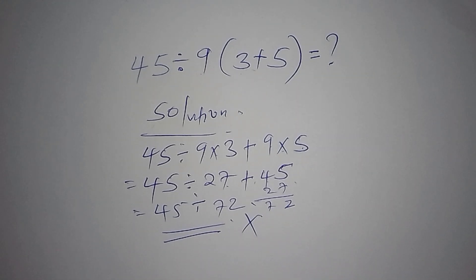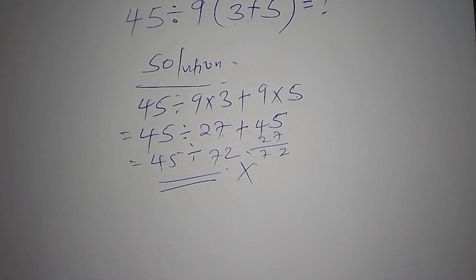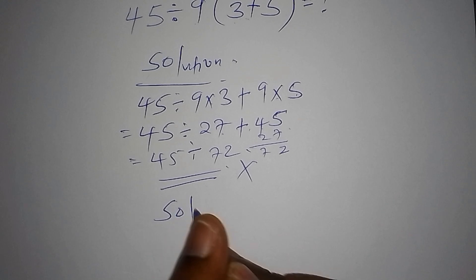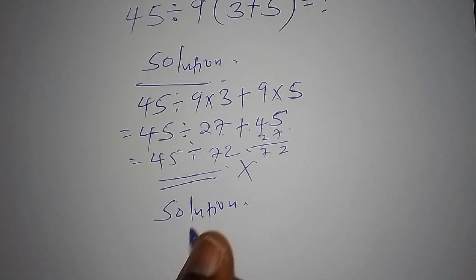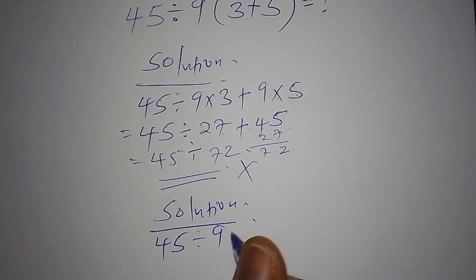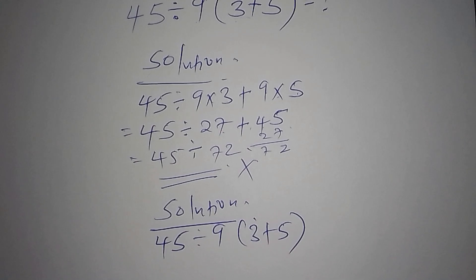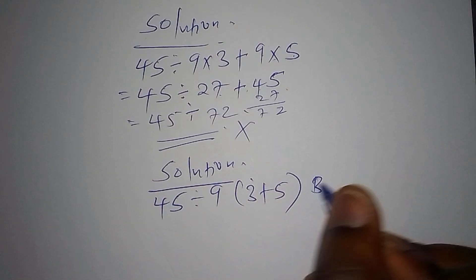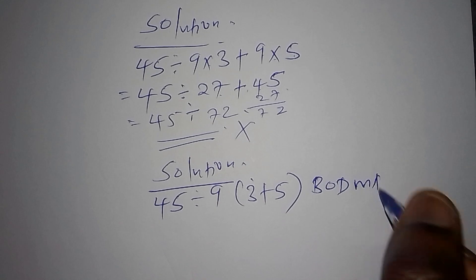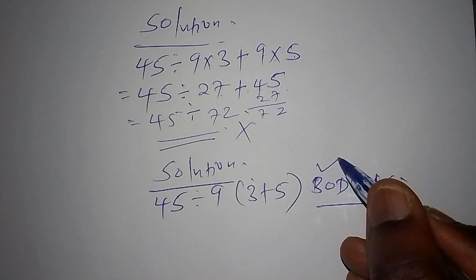Move to the right method you are supposed to use. Under this solution, we shall write the maths problem: 45 divided by 9 into bracket 3 add to 5. The best thing you need to do is check what is called BODMAS. BODMAS shall guide us on the order of operations. B stands for brackets.